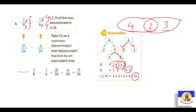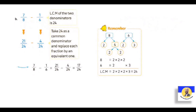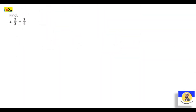يبقى أول حاجة حبيبي، عشان تعمل adding or subtracting fractions with unlike denominators، لازم نخليهم الأول same denominator. Another example: if you have 2 over 3 plus 3 over 4.